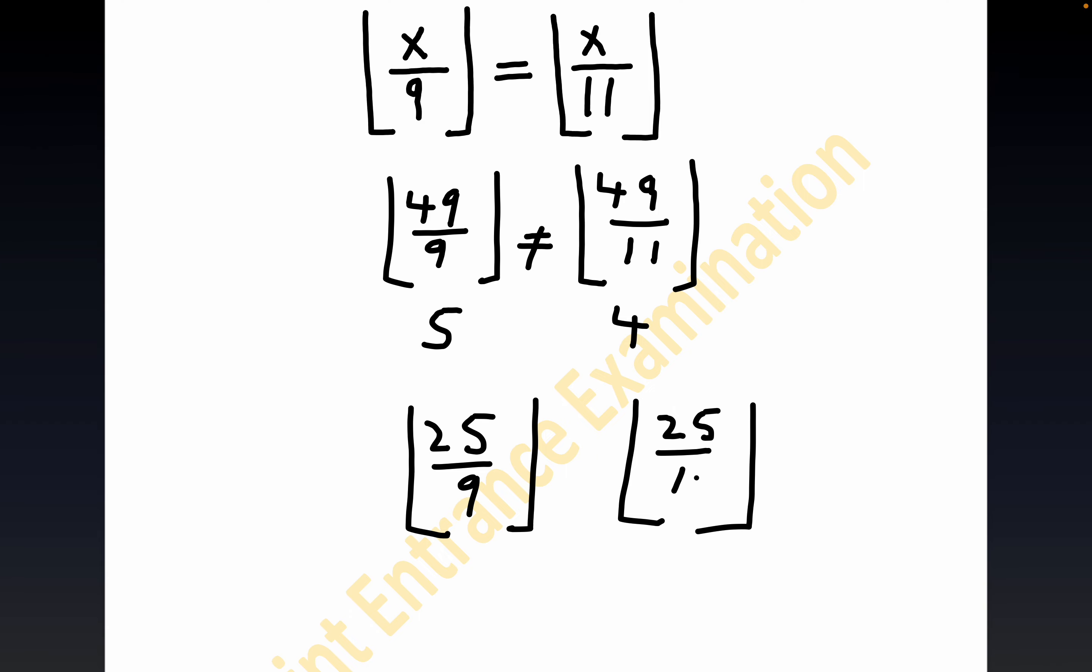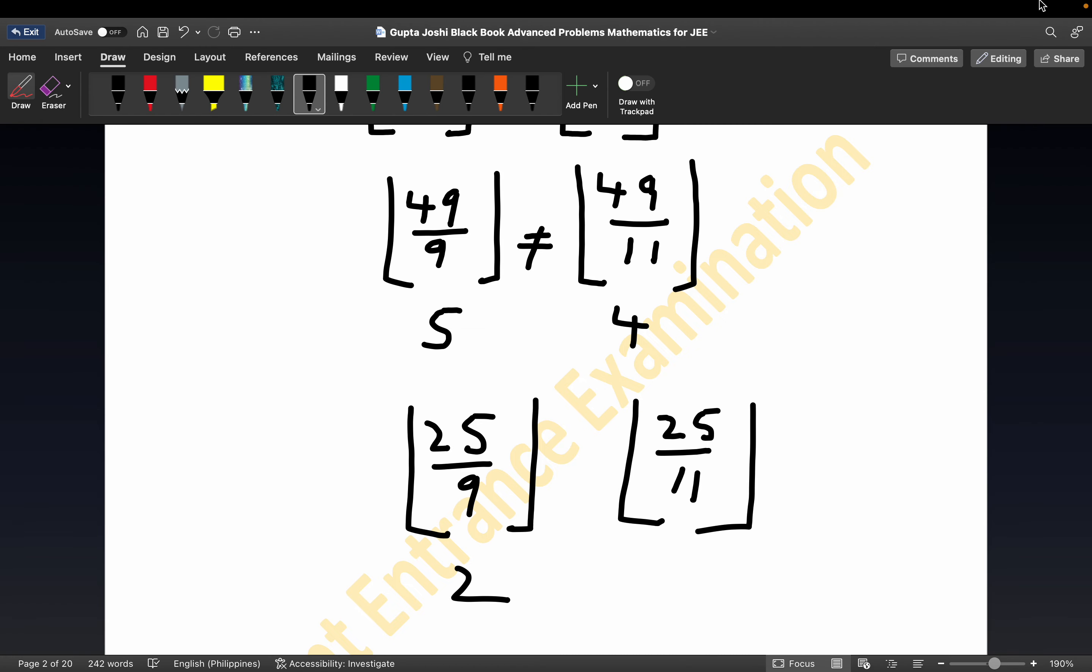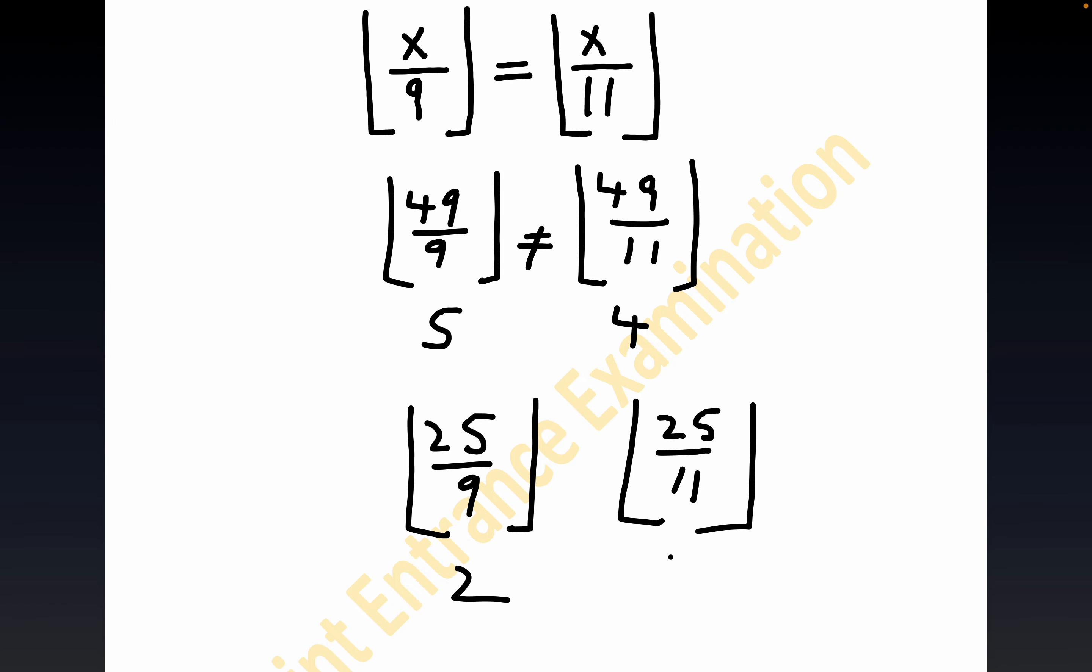Now here, 25 divided by 9 has a quotient of 2—it's 2 times 9 plus 7. So the floor here would be 2. This would have to be 27 before it would reach a floor of 3. And also 25 over 11 has a floor of 2—2 times 11 is 22 with a remainder of 3. So this is a solution. This is one solution.